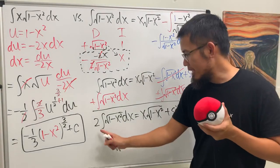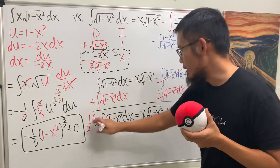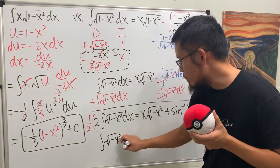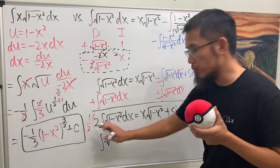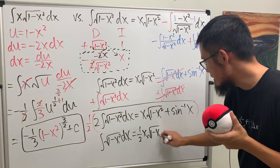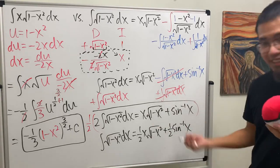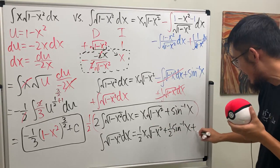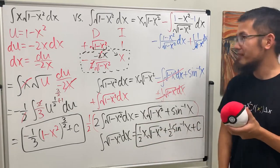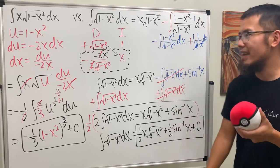We don't want the factor of 2, so we multiply everything by one-half. We end up with the integral of the square root of 1 minus x squared dx equals one-half times x times the square root of 1 minus x squared, plus one-half times inverse sine x, plus C. Let me know if you like this method or prefer trig substitution — and as always, that's it!